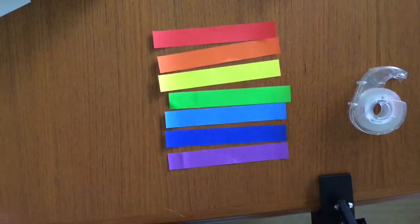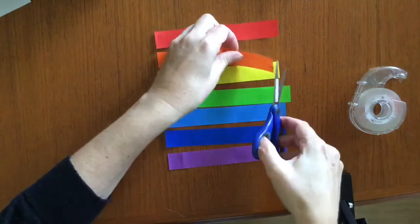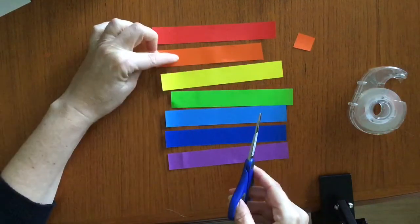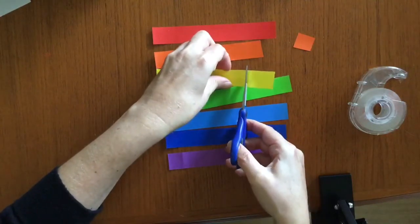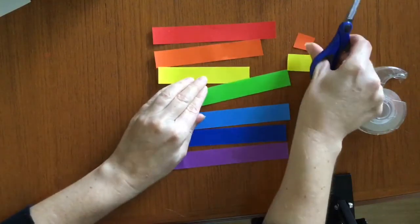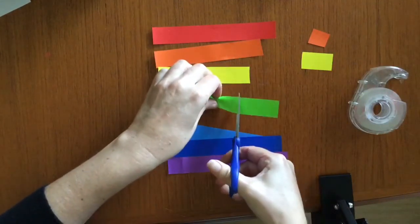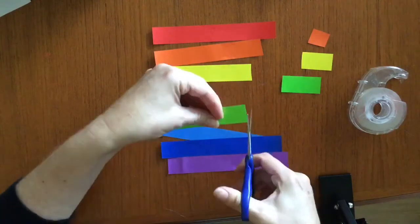So what you want to do is grab some scissors, leave the red one that length, and we're just going to cut a little bit off the orange. Then we want to cut a little bit more off the yellow, so each piece going down is getting slightly shorter. Maybe I need a little bit more off that one.